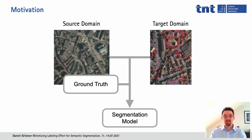A common approach for avoiding it is so-called domain adaptation. In domain adaptation, we have the source domain where we have the input images and the ground truth so that we can train a performant model for the source domain, but we also have input images for a target domain for which we don't have any ground truth, but we still want to learn a model that is applicable to the target domain. These domain adaptation approaches work okay, but still they don't reach the performance you could reach if you had actual ground truth for the target domain.